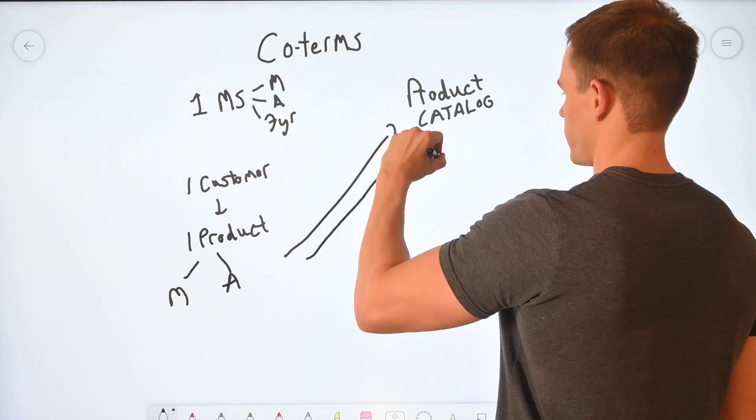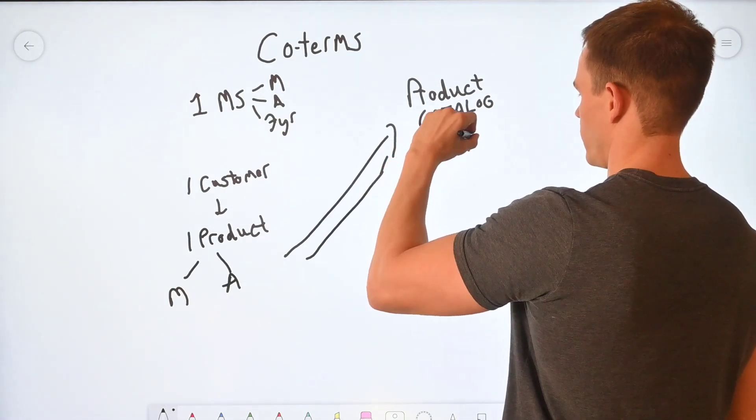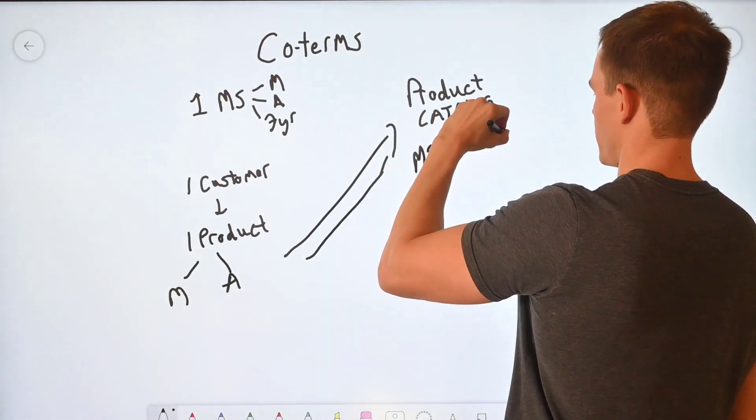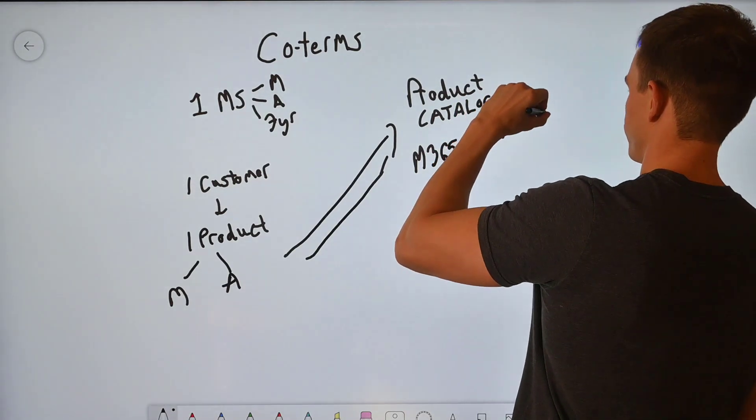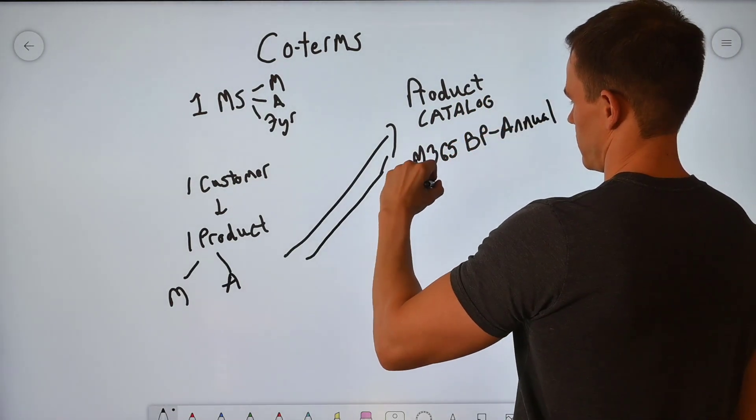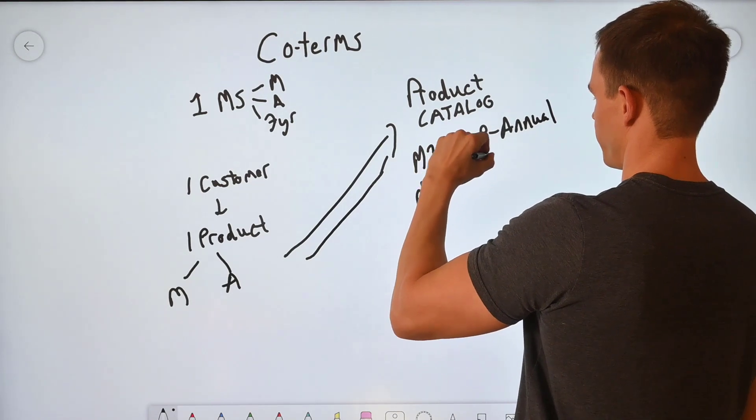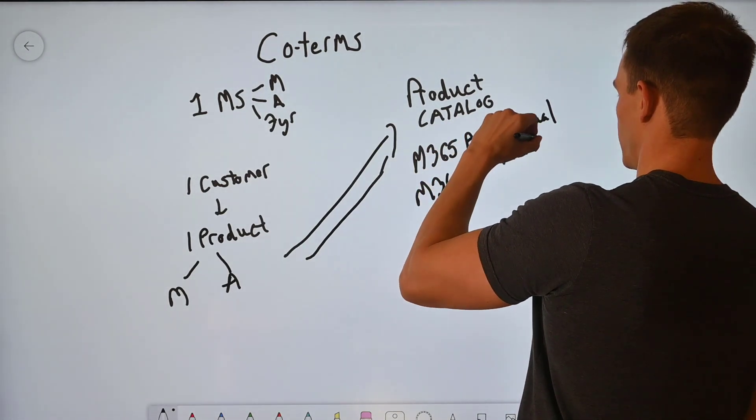So in this example here, we would have M365 business premium annual and M365 business premium monthly.